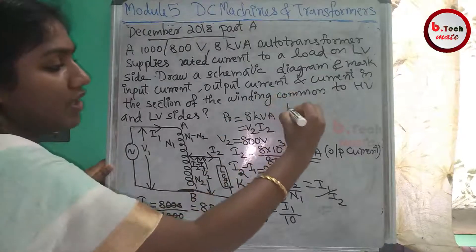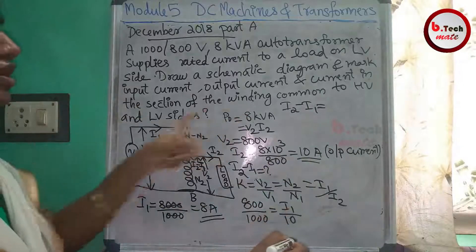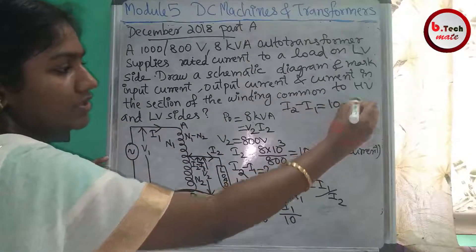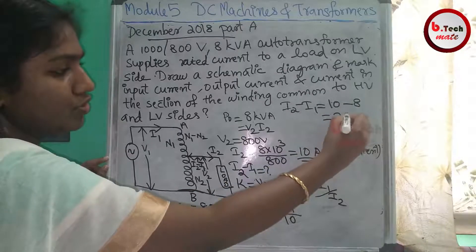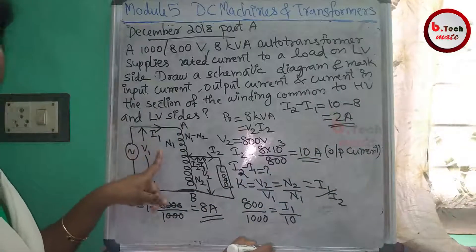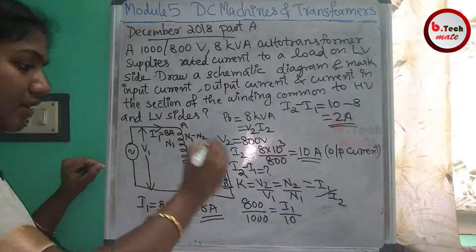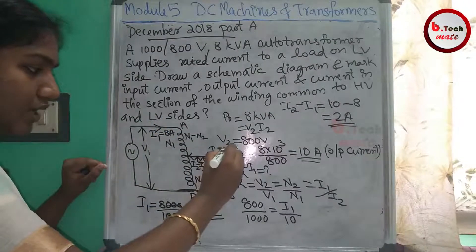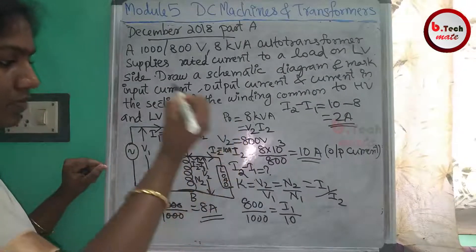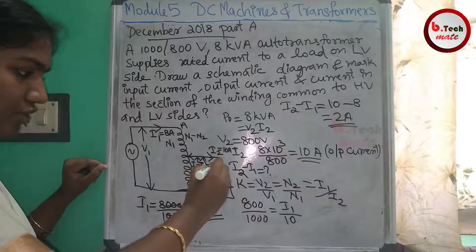The current in the common winding section is I2 minus I1. I2 minus I1 is the common winding current. I2 minus I1 equals 10 minus 8, which is equal to 2A. So I1 is 8A, I2 is 10A, and the common winding current is 2A.